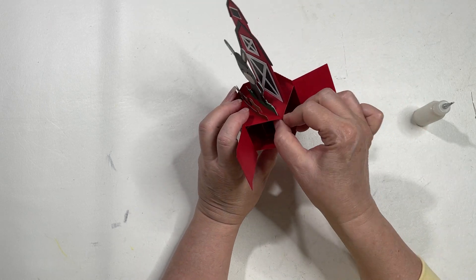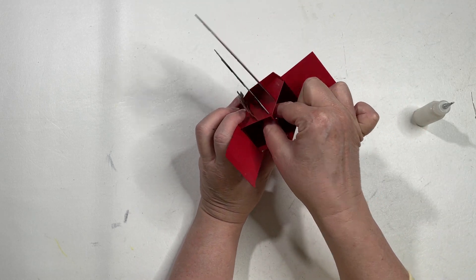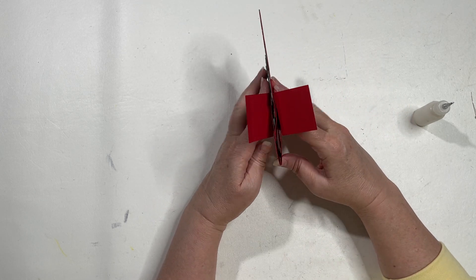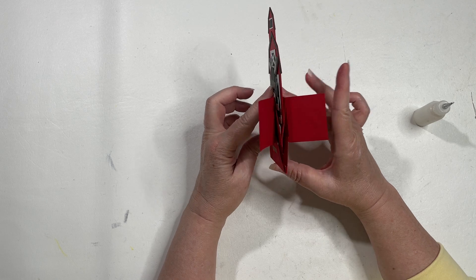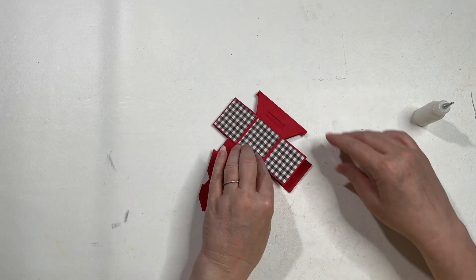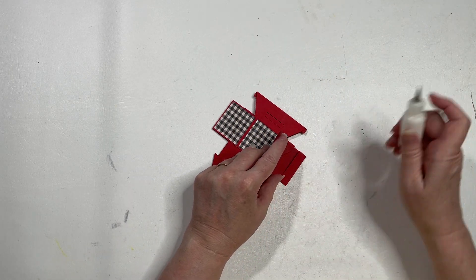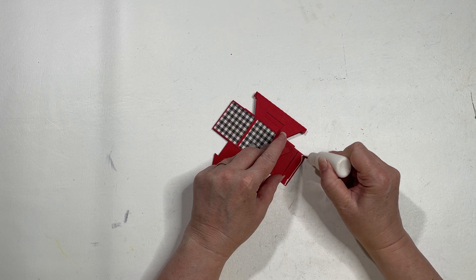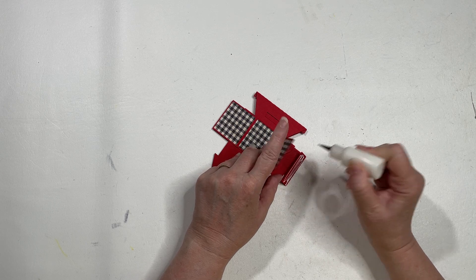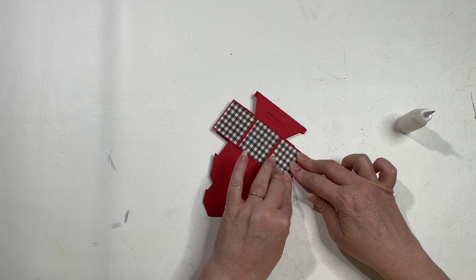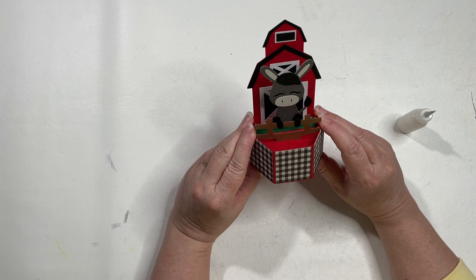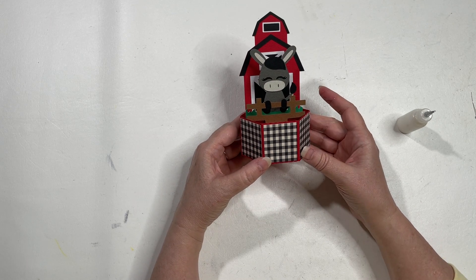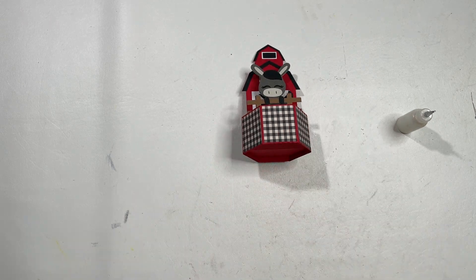And then we're just going to take a look in here. Make sure we have this all glued and that when you push up, everything lifts up the way it's supposed to. And you come to this tab and we're going to close it up. And there is our donkey pop-up card. Thank you for joining me.